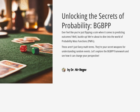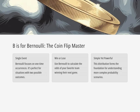We've got this source document all about discrete probability mass functions, and it's got this whole BGBPP thing going on. That BGBPP thing is actually super helpful. Each letter stands for a different type of PMF, and it's a good way to keep them all straight. So let's break it down, starting with B.